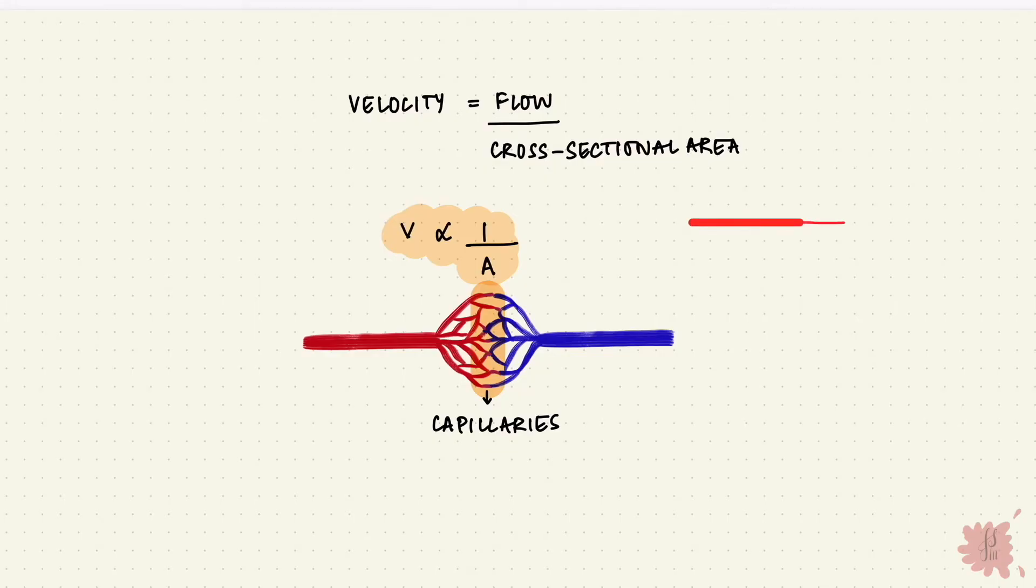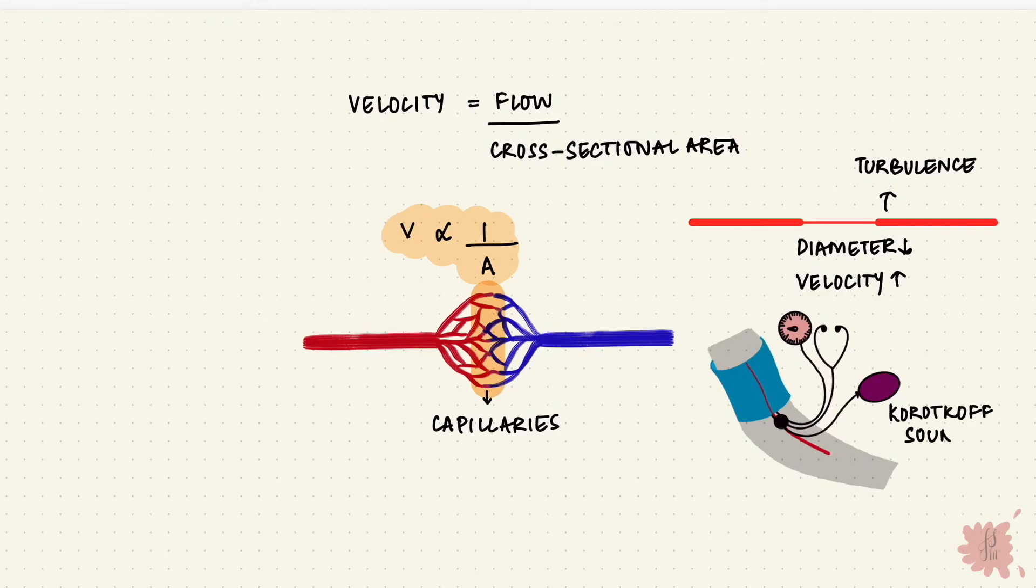If a vessel constricts, its diameter reduces, and the velocity increases. That can create turbulence in the vessel beyond the point of that constriction. So again, think of the Korotkov sounds.